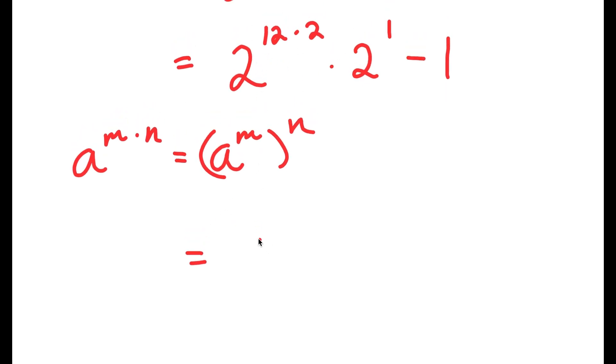So 2 to the power of 12 times 2 is going to equal 2 to the power of 12 to the power of 2, and I have this times 2 minus 1.